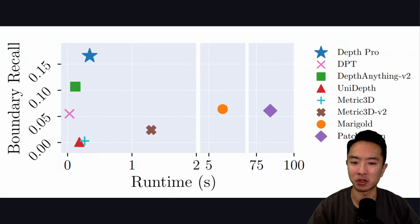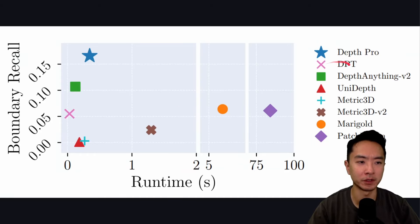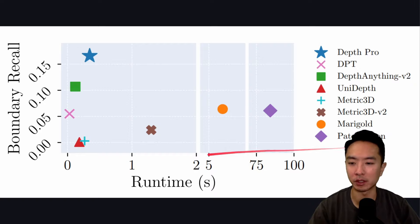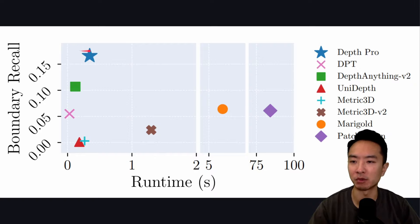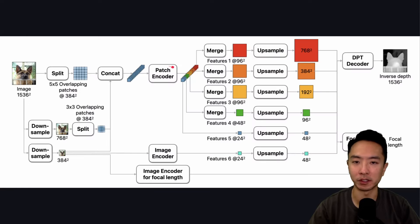Looking at this chart, you can see it's comparing different methods: Depth Pro, DPT, DepthAnything v2, Unidev, Metric3D, Metric3D v2, Marigold, and PatchFusion. Depth Pro is marked with a star at the top. You can see that its runtime is very fast and the boundary recall is very good.